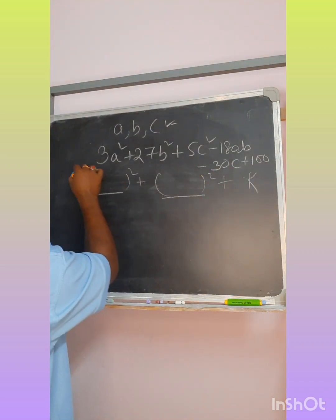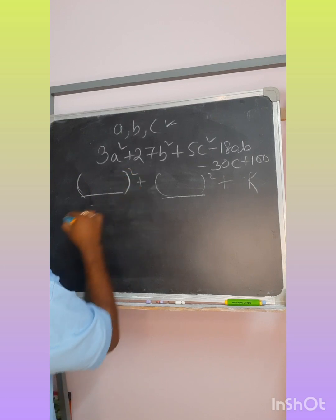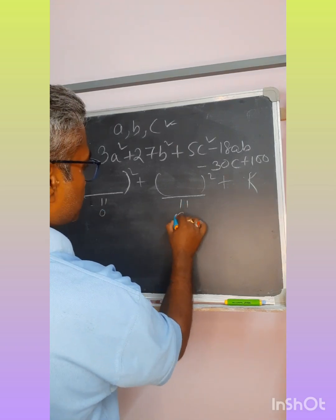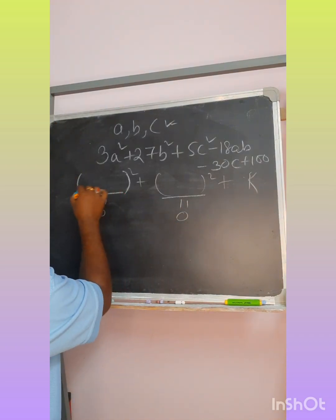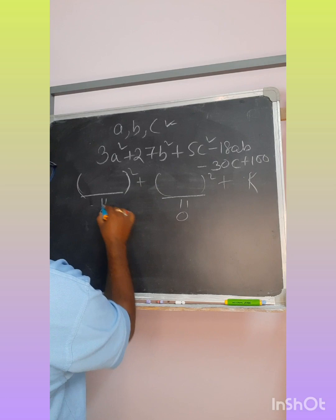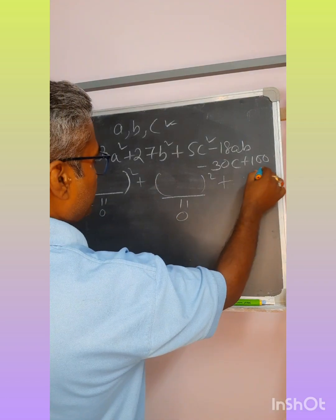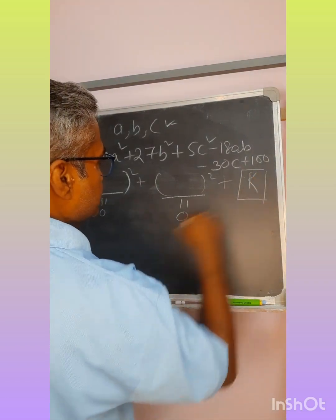You know that any square, the value which it can attain minimum is equal to 0. If I assume these squares are 0, then only minimum value possible is the constant left.